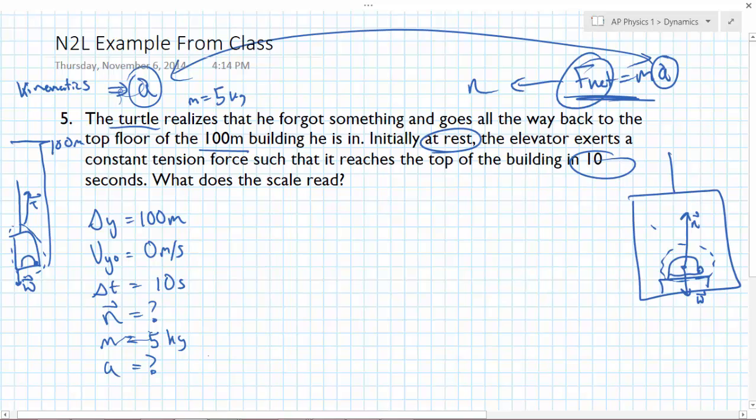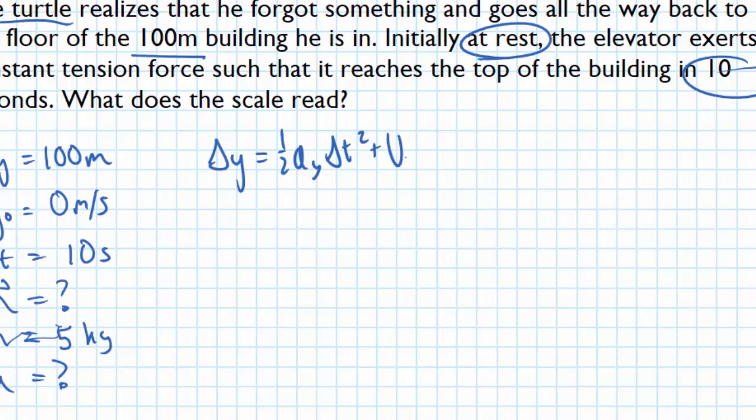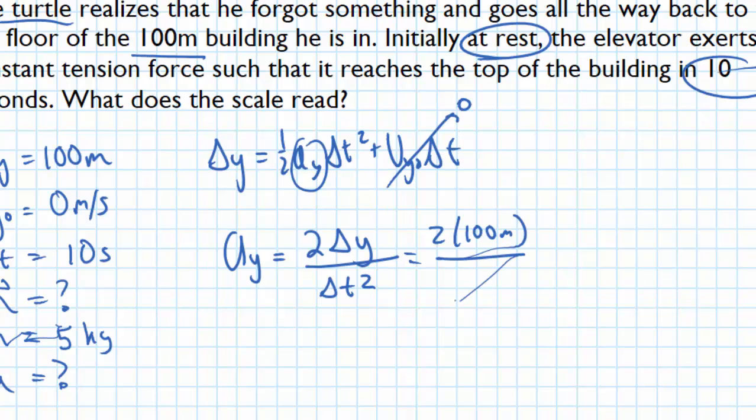I'm going to find acceleration first, any way that I can, and I'm going to use kinematics here. I have delta y, I have initial velocity, I have delta t, I'm looking for a. We have an equation that relates all those. Kinematic equation number one. The initial velocity is zero, so that reduces us down to this equation here. I'm going to solve for a sub y. When I do that, I'm going to get a sub y is equal to 2 times delta y divided by delta t squared. What I can do now is solve for my acceleration using what I know about kinematics. 100 meters vertical displacement divided by the 10 seconds that it took to travel that 100 meters, and I can figure out that my acceleration is 2 meters per second squared.